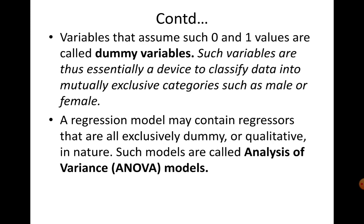Variables that assume 0 or 1 are dummy variables — a device to classify data into mutually exclusive categories such as male or female, or belonging to the southern region or not. ANOVA models, or analysis of variance models, are those models which contain only qualitative variables or dummy variables as the regressors — the X variables or explanatory variables appearing on the right-hand side of the regression function.